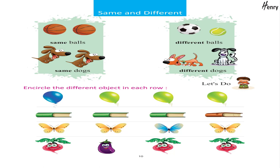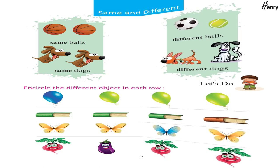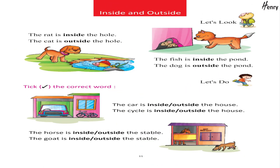Same and Different: Same balls, same dogs, different balls, different dogs. Let's do — encircle the different object in each row.